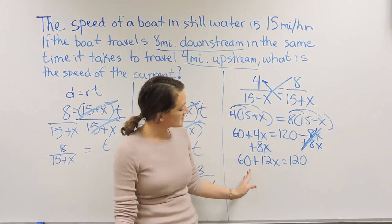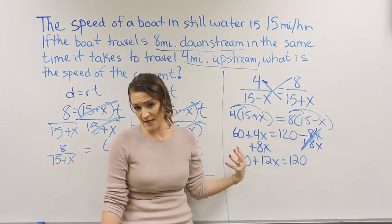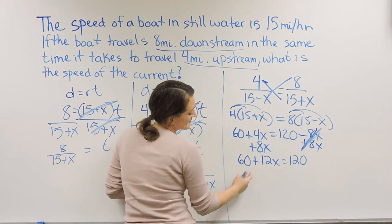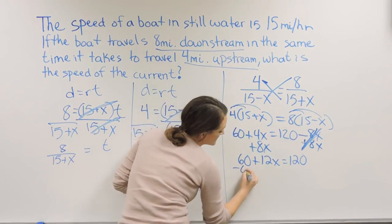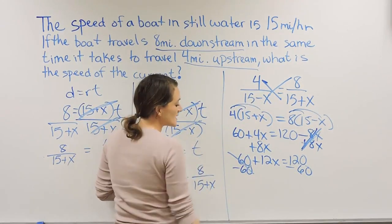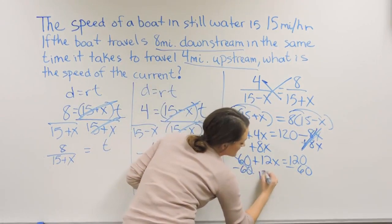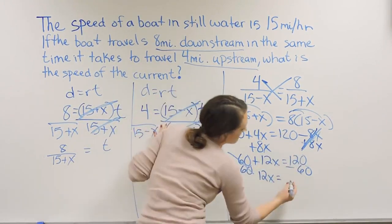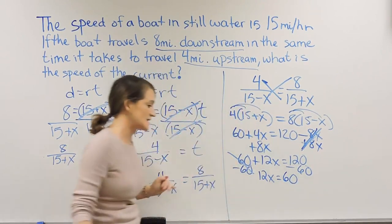And since I'm choosing to get X on the left-hand side, that means I want my numbers to go to the right-hand side. Since this is a positive 60, I'm going to subtract 60 on both sides. So that will cancel on the left, I can drop down 12X. And on the right-hand side, 120 minus 60 is 60.